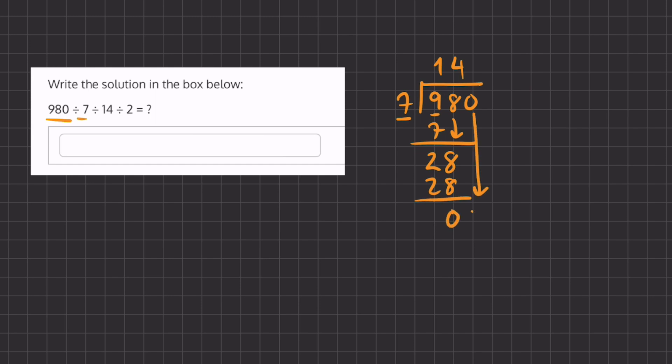We'll carry down our last number, this 0, and 7 goes into 0, 0 times. So now we can rewrite this problem as 140 divided by these two numbers.